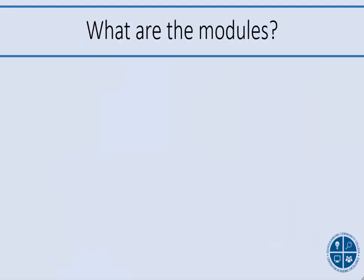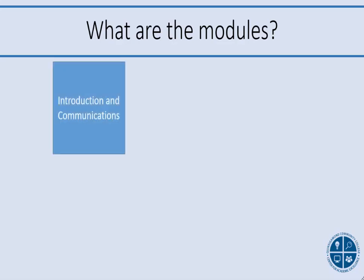The six modules included in Instructional Continuity through Remote Instruction with Blackboard are: course introduction and communications, including adding your contact information, announcements, using the discussion board, adding your syllabus, and expectations for your time together in the remote environment.